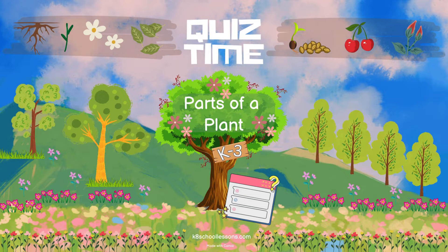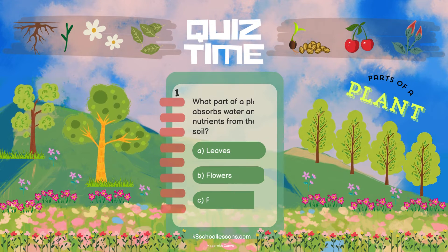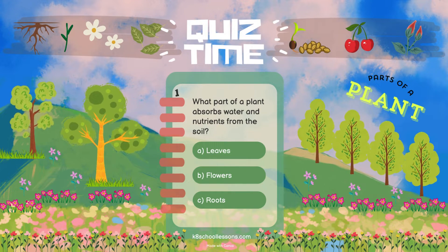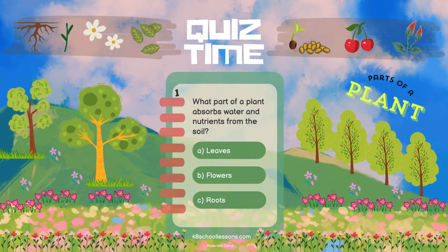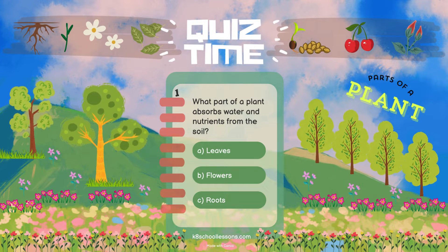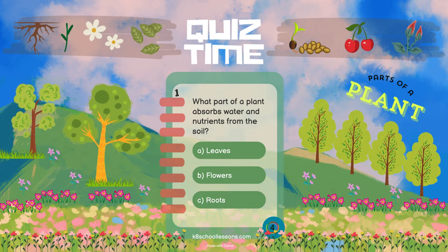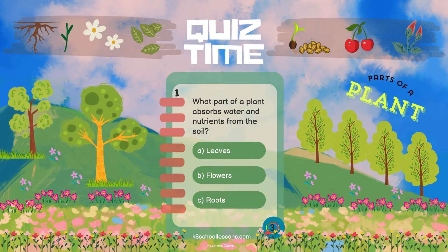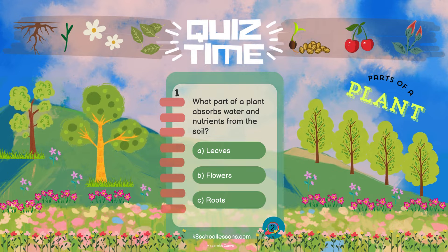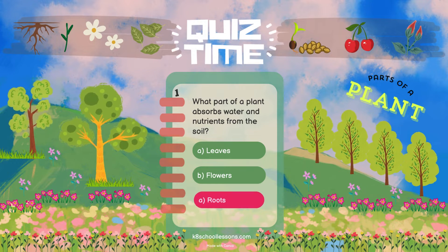Quiz time: parts of a plant. What part of a plant absorbs water and nutrients from the soil? Roots.